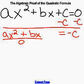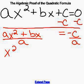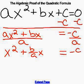Then you divide both sides by a. And so x squared plus b over ax equals negative c over a.